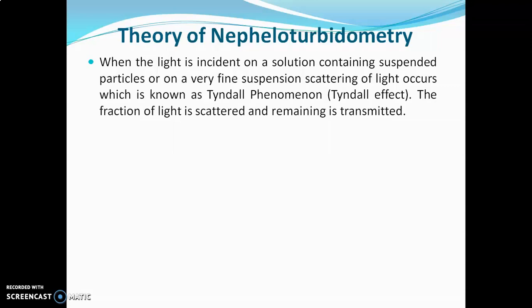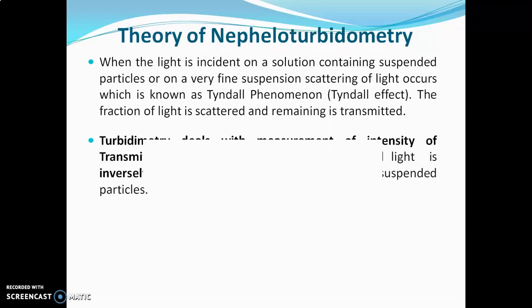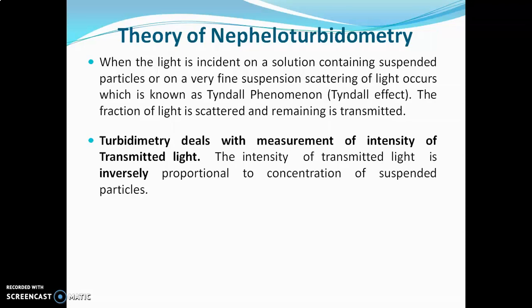Nephelometry and turbidometry are two different techniques. Turbidometry deals with measurement of the intensity of transmitted light. The intensity of transmitted light is inversely proportional to the concentration of suspended particles. Turbidometry measures the turbidity of a solution — if the amount of suspended particles is more, turbidity will be more, absorption of light is more, transmission of light is less, and that's why the intensity of transmitted light is inversely proportional to the concentration of suspended particles.